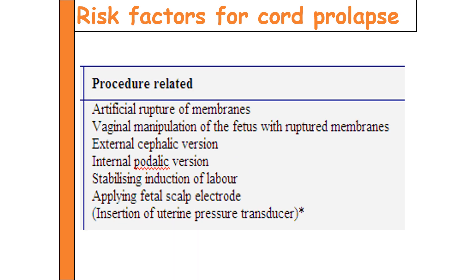Procedures such as artificial rupture of the membrane, vaginal manipulation of the fetus with ruptured membranes, external cephalic version, internal podalic version, stabilizing induction of labor, and application of a fetal scalp electrode may all lead to cord presentation or cord prolapse.